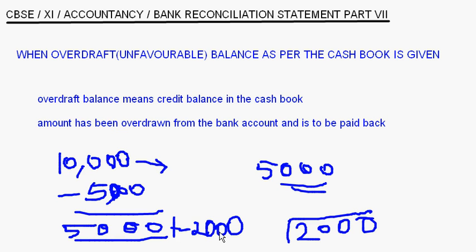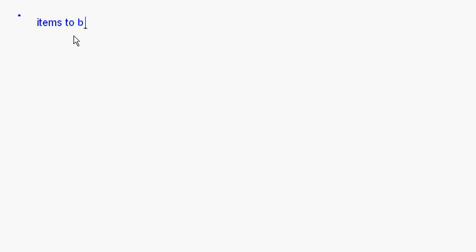Keeping this in mind, let's look at the items to be added and deducted when we start from the overdraft balance as per the cash book to arrive at the balance as per the pass book. The first item to be added is: checks deposited but not collected by the bank.